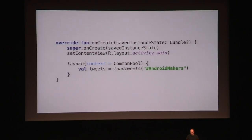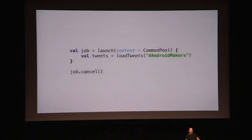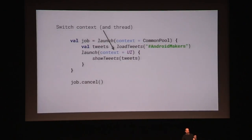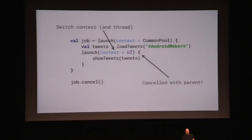We can use this in our create method — just load on the background thread and get the result. The launch function returns a job, and the job is something you can call cancel on. We need that to not update our UI when the activity gets destroyed. You can also call another coroutine builder inside a coroutine — if we call launch again but switch context to run on the UI thread, we start on the background thread, load our stuff, launch another coroutine, run on the UI thread, and it just works. Calling cancel on the outer job will also cancel the child.